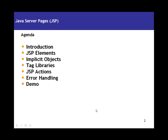So this is the agenda for our session. We will start off with some introduction where we will see what a JSP is and where it comes into the picture of the whole MVC architecture and some of the building blocks of JSPs. Then moving forward we will see what the different JSP elements are and how you use them. Then implicit objects — what are the different implicit objects we have in JSPs, their scope, and what they are used for. Tag libraries is one of the important concepts in JSPs. We will see how to use tag libraries and how to build your own. And we will see the different JSP actions, error handling, and we will have a demo at the end.